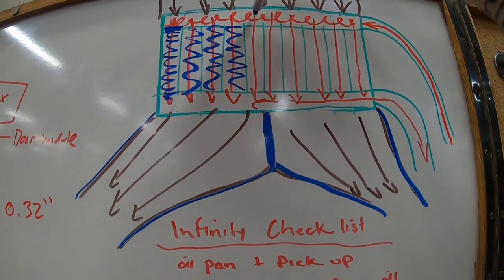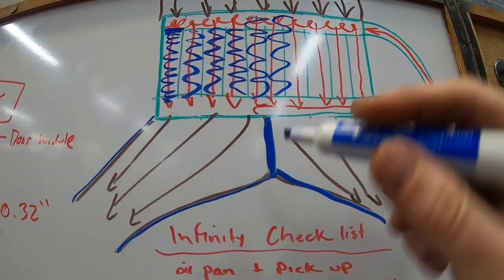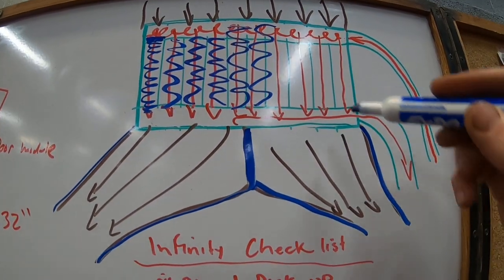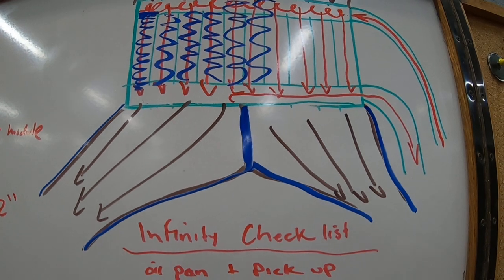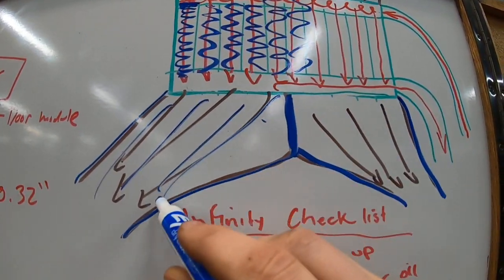And as these get clogged up, you get to a point where this side of the heater core is not getting hot. You're still getting flow through this side, so you get plenty of heat out of the one side, but on the other side you're just getting cold air coming out.